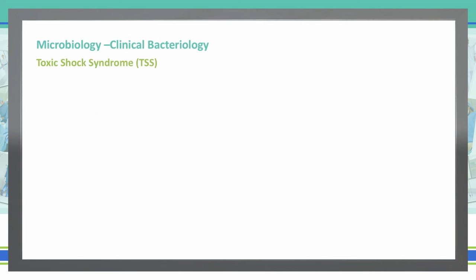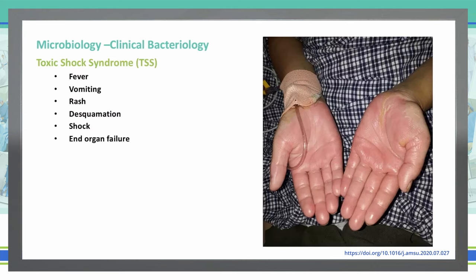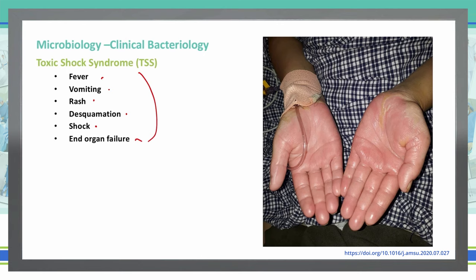Furthermore, Staph aureus, as we've mentioned, can cause toxic shock syndrome. Toxic shock syndrome is classified as fever, vomiting, rash, desquamation, shock, and then end organ failure. What's happening here is that this Staph infection is causing all of these potential side effects, as well as AST, ALT, and bilirubin elevations, so it's also going to be affecting our liver.